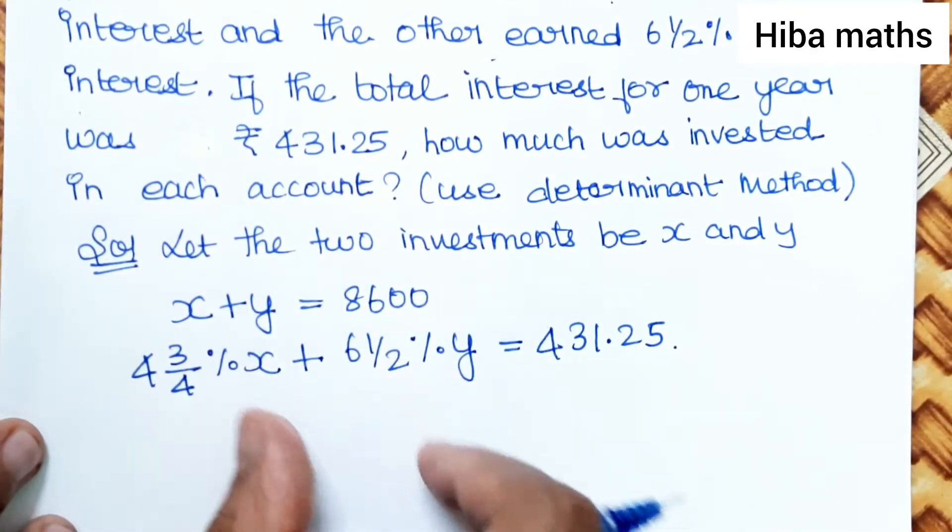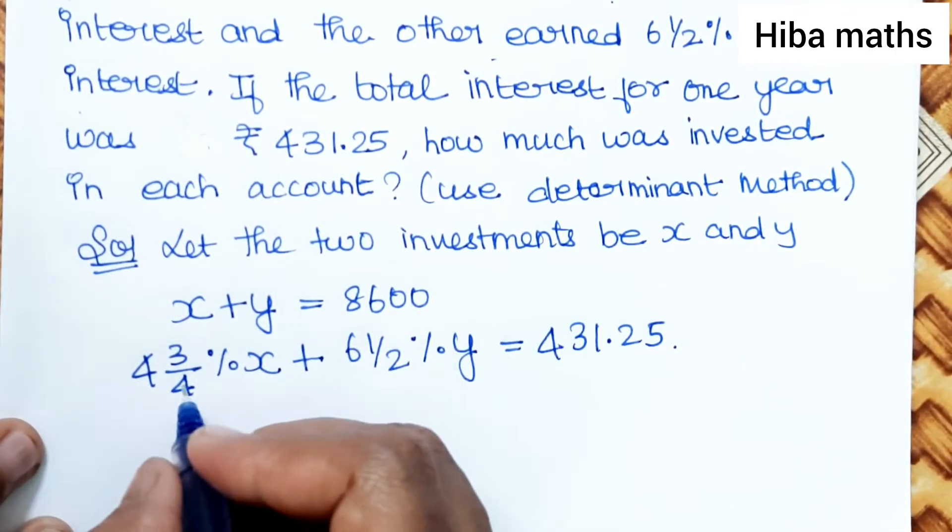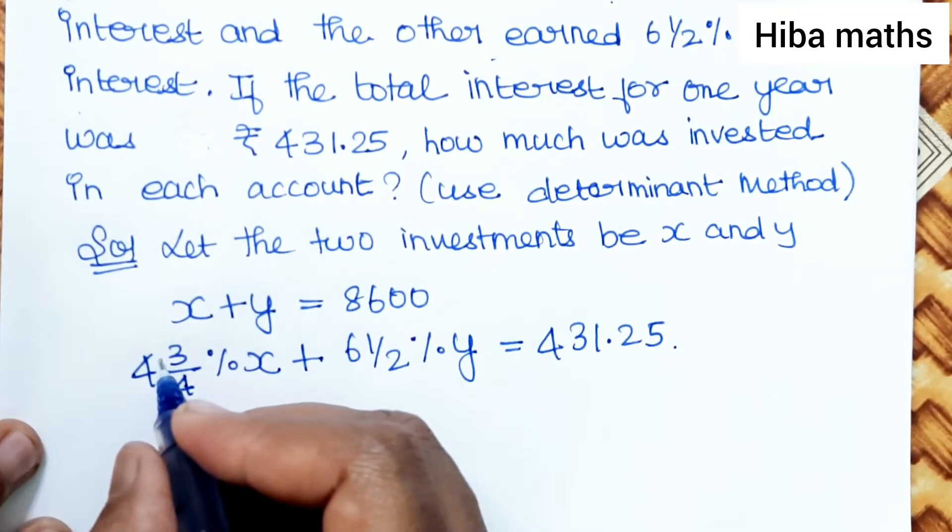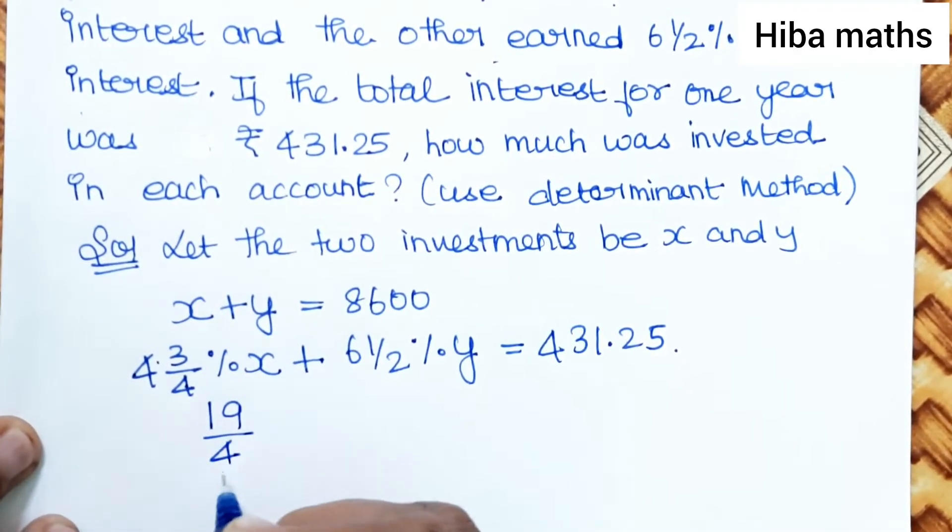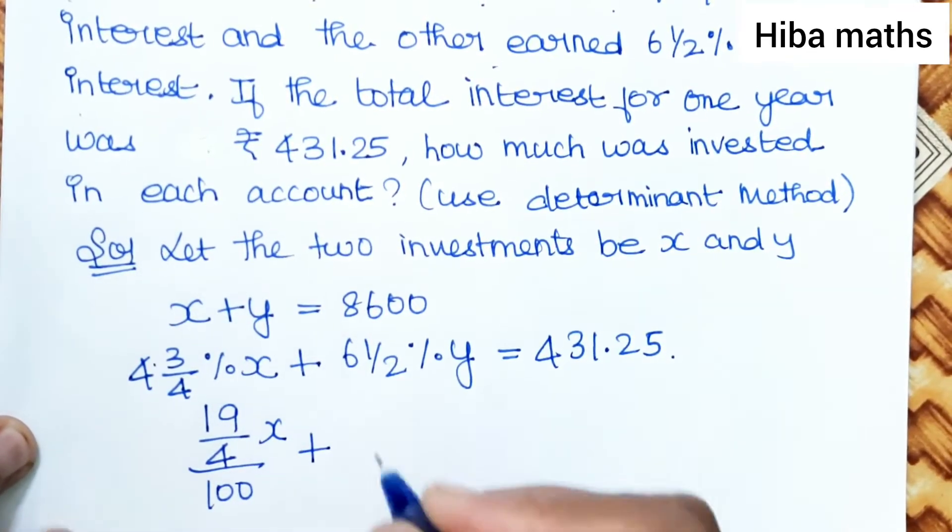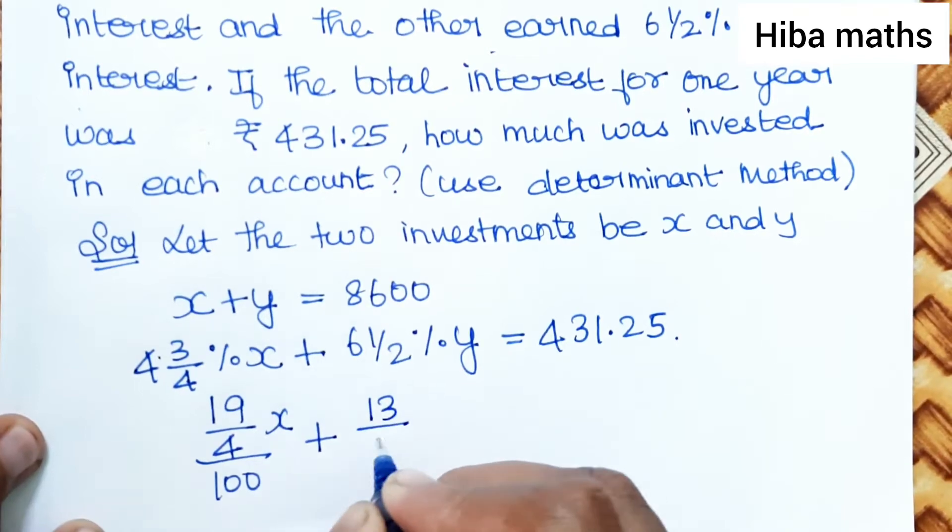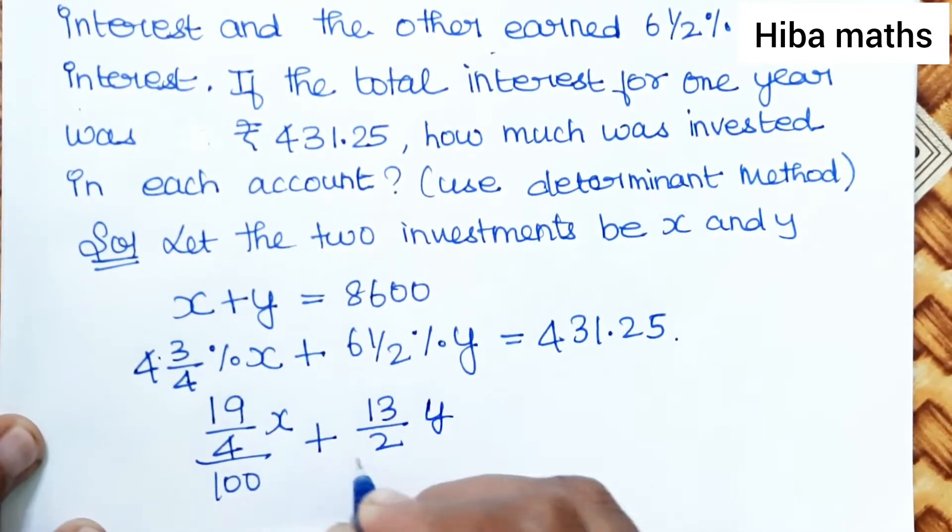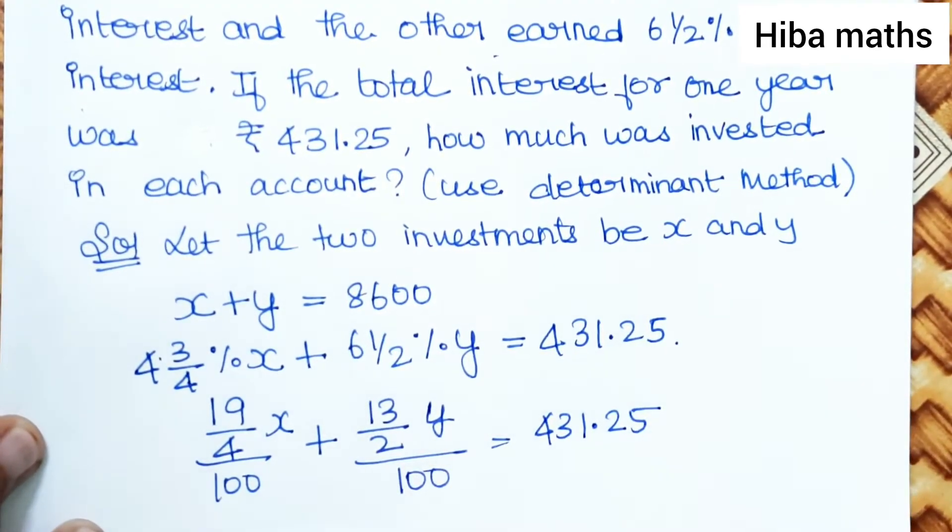Now convert the percentages into an equation. This is a mixed fraction: 4 3/4 becomes 19/4 divided by 100 times X, plus 6 1/2 becomes 13/2 times Y divided by 100, equals 431.25.